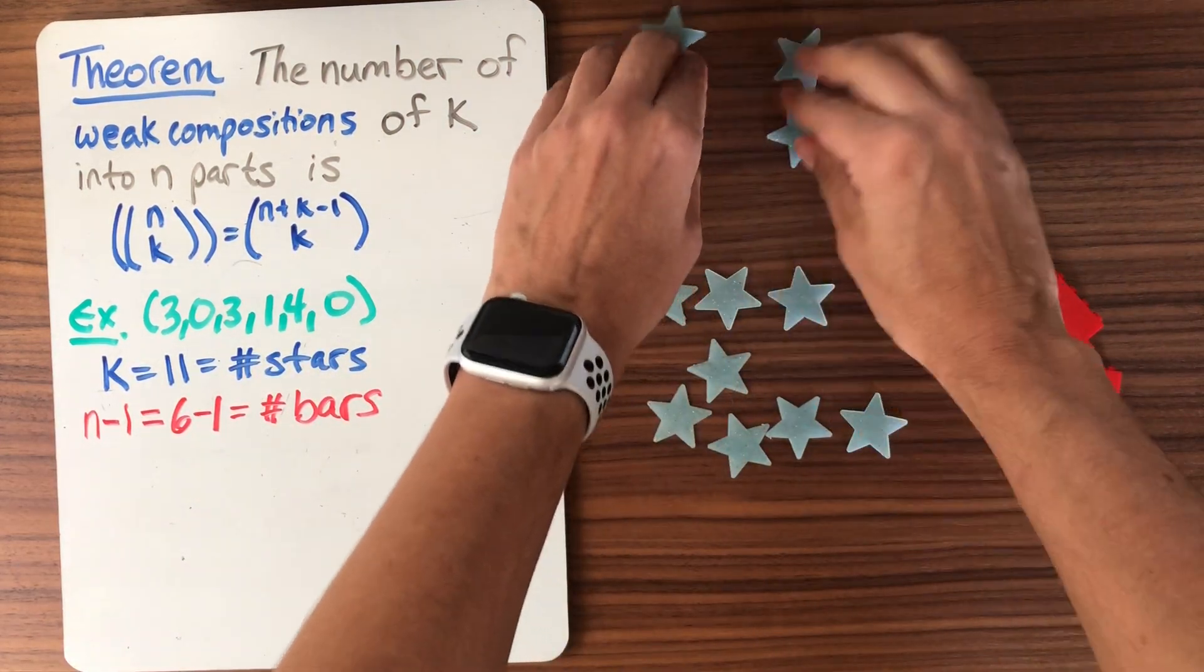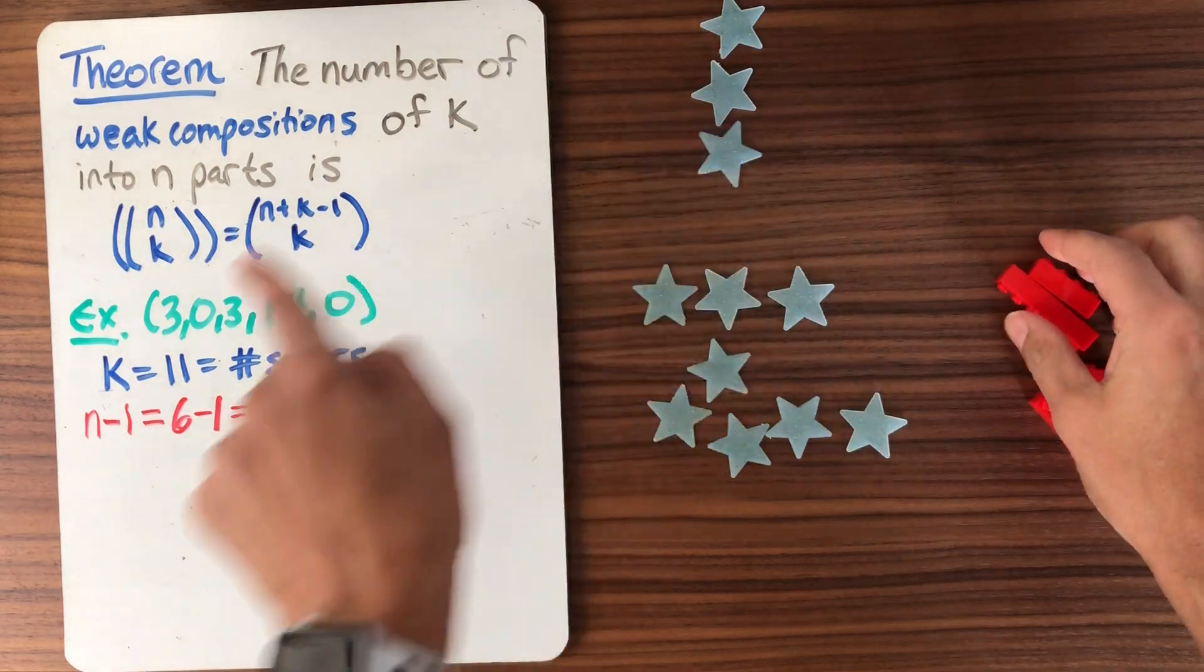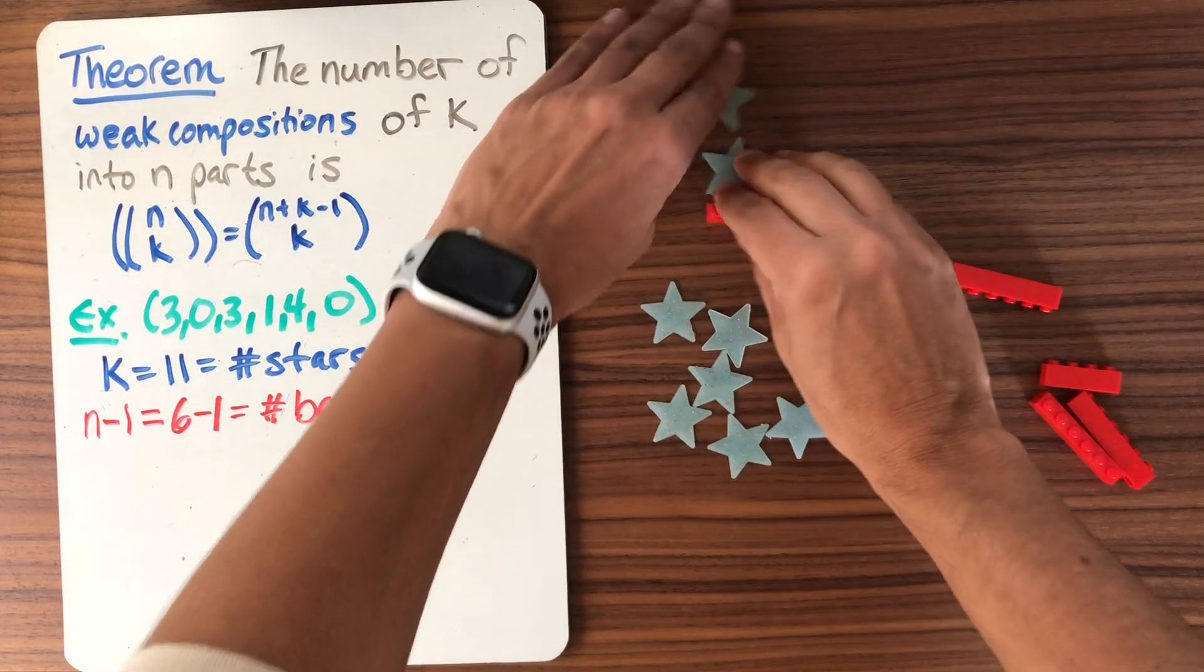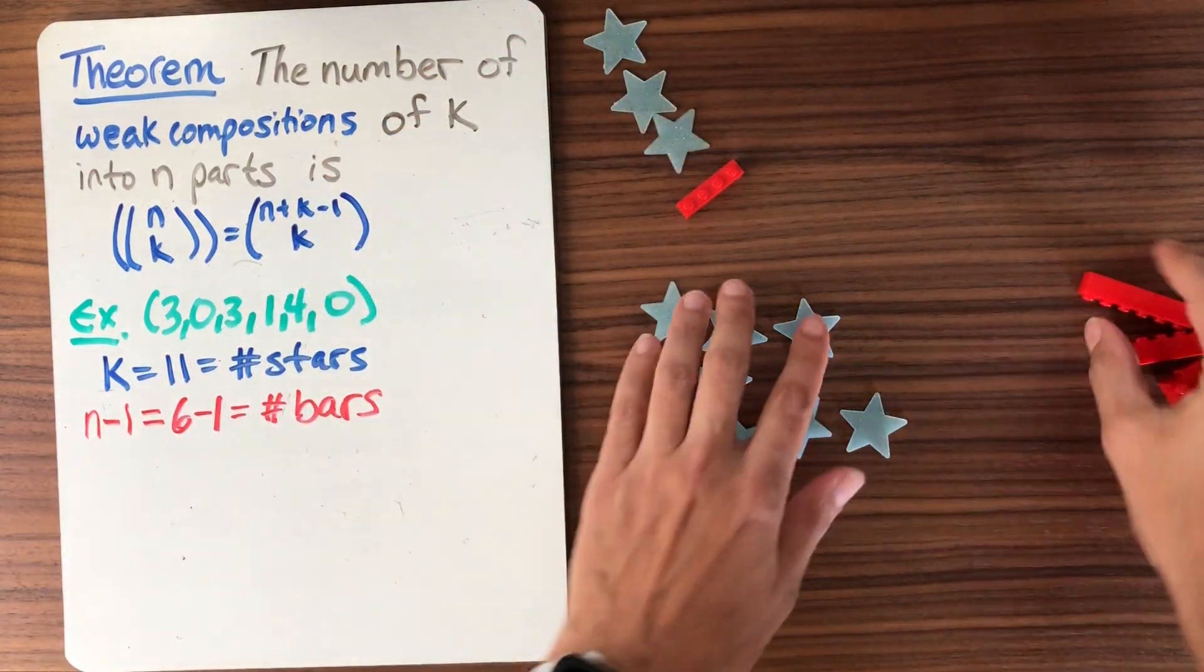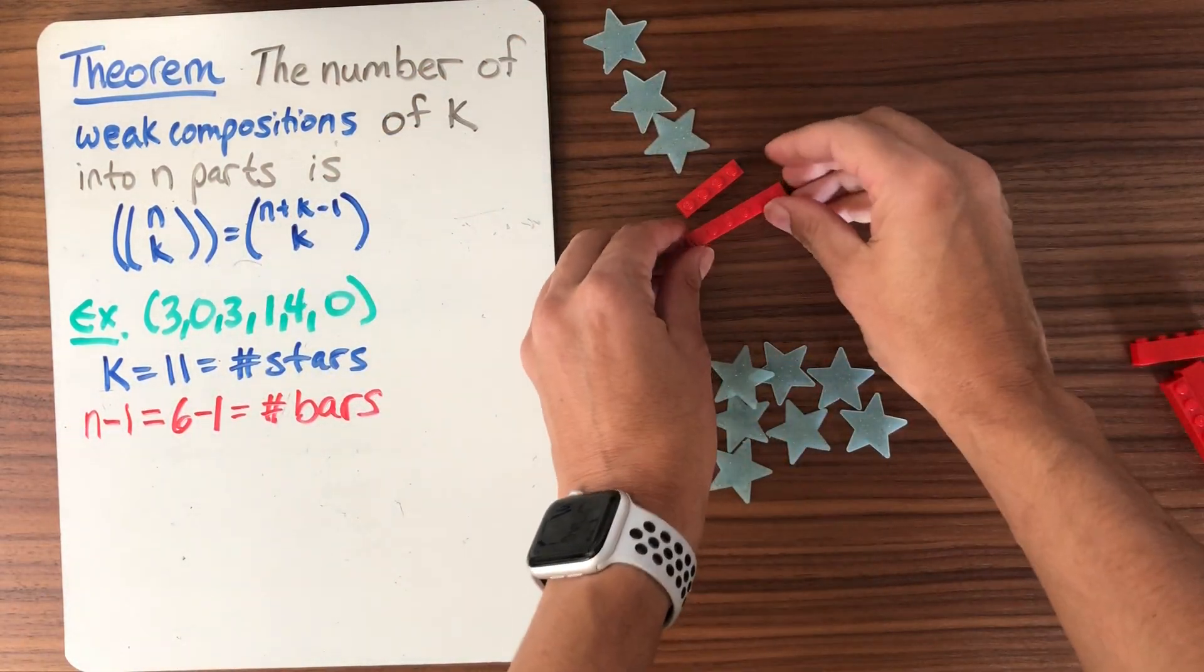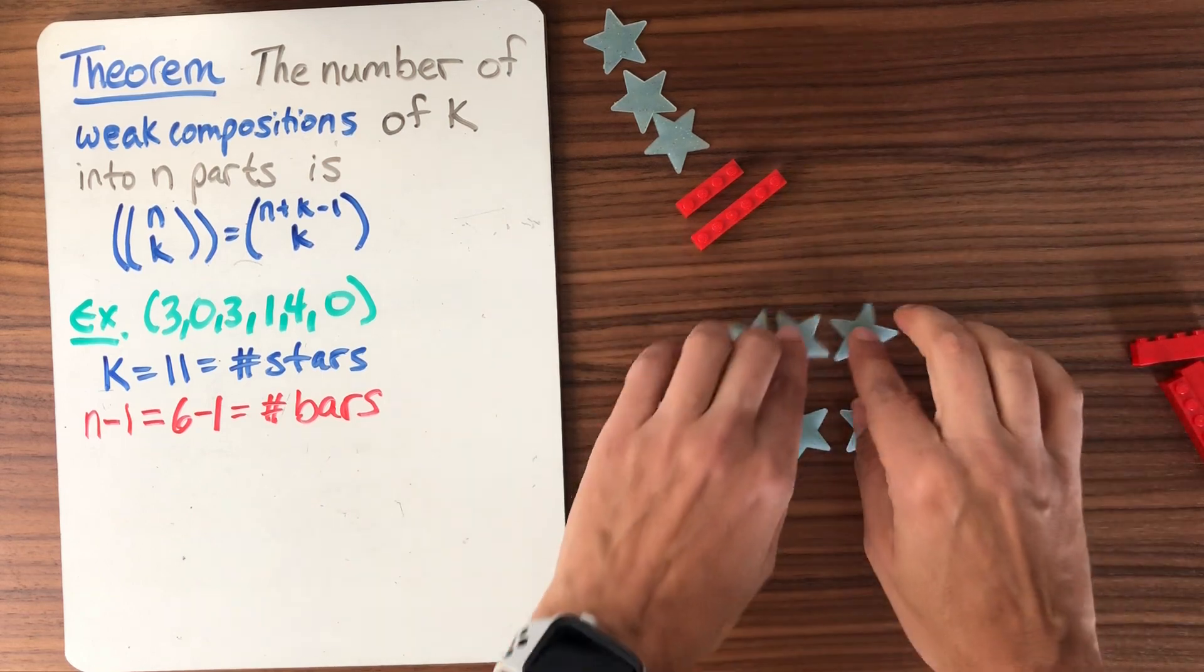So how would we represent this composition in terms of stars and bars? Well, I would do three stars for the first part, and then I would put a bar. Let's see if I can do it diagonally, maybe just so it all fits. And then I'll put a bar. And then I have zero stars. So I'll just take another bar. And then three more stars.